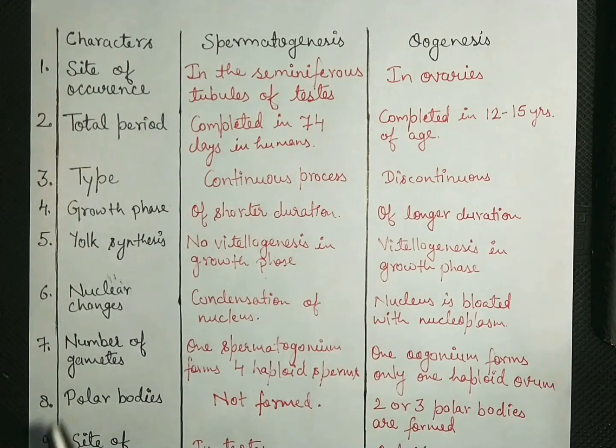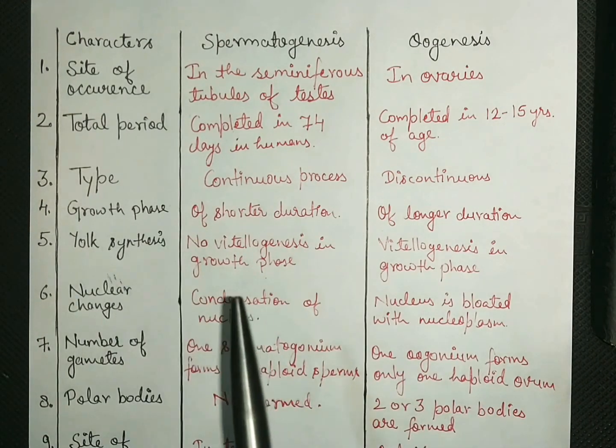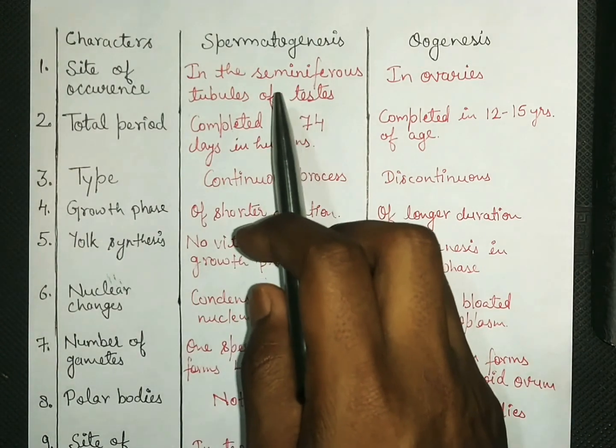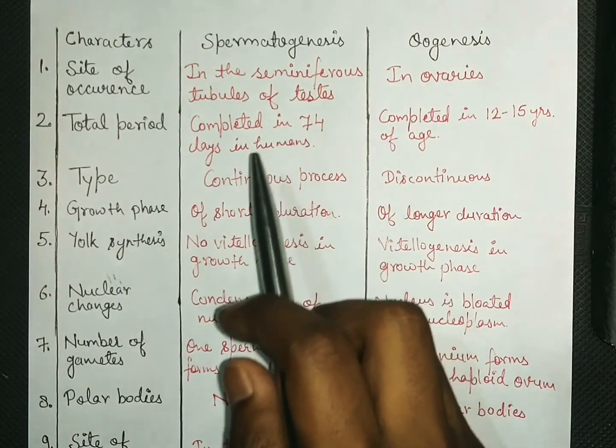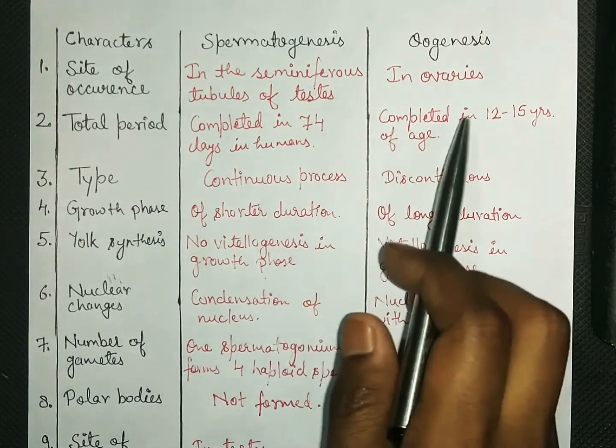So where do these processes occur? Spermatogenesis occurs in the seminiferous tubules of testes and oogenesis occurs in ovaries.